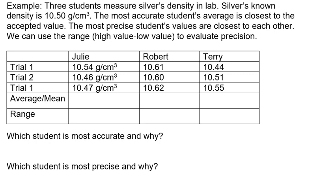The most precise student's values are closest to each other, and we will use the high minus low values. If we calculate the averages for each of these students, Julie's average is 10.49, Robert's average is 10.61, and Terry's average is 10.50.